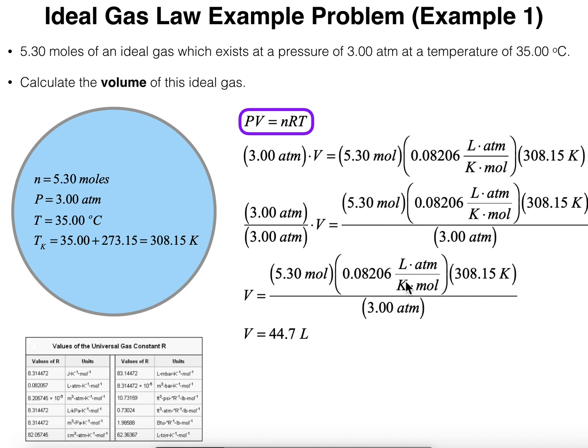And so the answer to this question, what's the volume of this ideal gas? It's going to be 44.7 liters. So hopefully this calculation made sense to you.